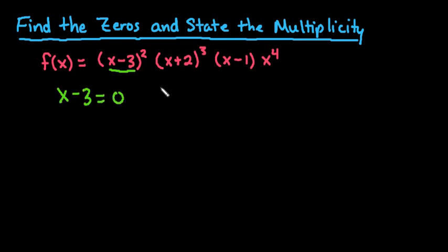So I would do x-3 equals zero, x+2 equals zero, x-1 equals zero, and we have to do x to the 4th or x equals zero. It doesn't matter what the power is because that's the multiplicity. The multiplicity is how many times something repeats.